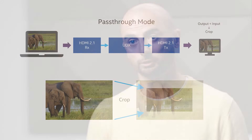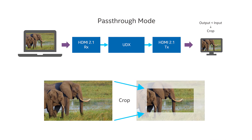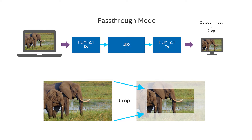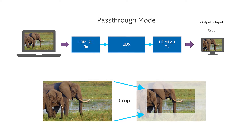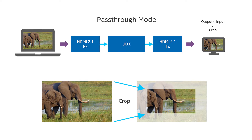If the input resolution is larger than the output display resolution, then a suitably sized section of the input is cropped for display by the clipper IP core.